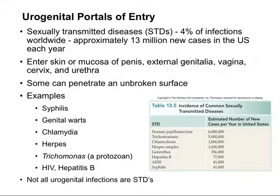There are some non-STD urogenital infections. For example, when the natural biota of the GI tract is transferred accidentally to the urogenital tract — which happens commonly in females — those are bladder infections. This is caused by endogenous bacteria being in the wrong location. The data shows an increase in human papillomavirus and trichomoniasis, a decrease in syphilis and gonorrhea in recent years, and increases in chlamydia and herpes incidence.